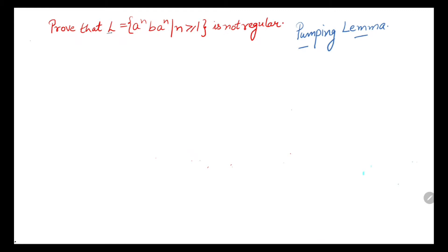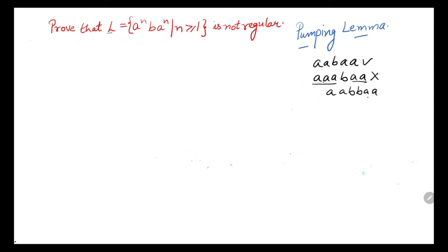What does this language mean? It is equal number of a's followed by b followed by equal number of a's. For example, the string 'aabaa' belongs to the language. A string like 'aaaba' does not belong because the number of a's before b is greater than after b. Also, 'aabbaa' does not belong because in the given language there is only one b - only a's can vary.